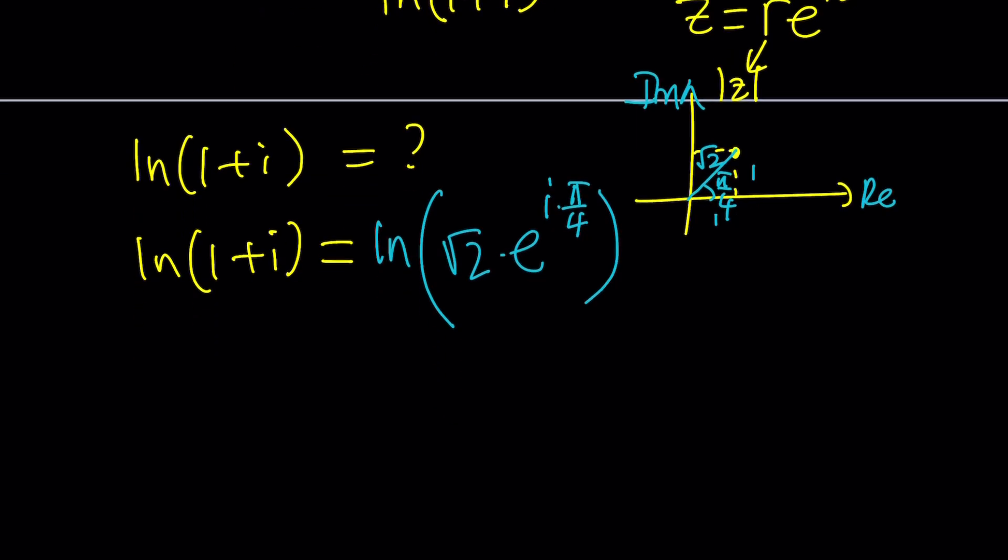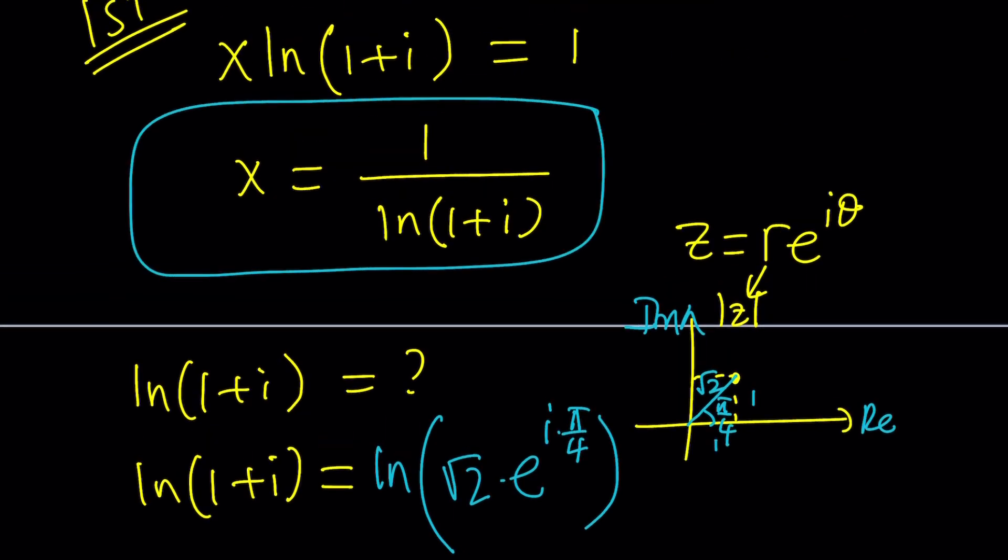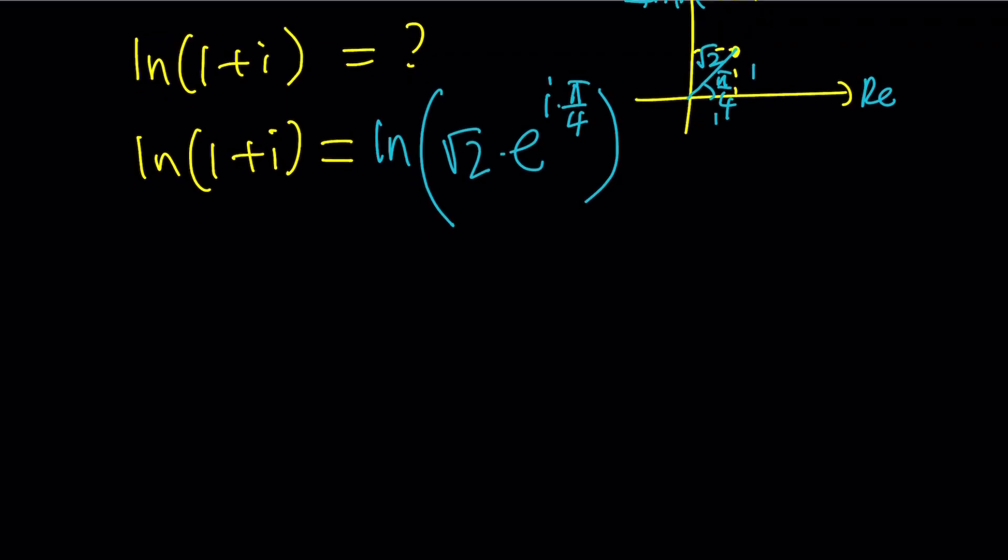Now we're going to ln this, but remember x is the reciprocal of that. So we have the ln of a product. √2 is a real number, e^(iπ/4) is a non-real complex number. So we have to split it up into two parts, the real and the imaginary. Since the log of a product is the sum of two logs, we can write it as ln(√2) + ln(e^(iπ/4)). We can bring this to the front, and ln(e) is 1. So this equals ln(√2) + iπ/4. So this is ln(1+i).